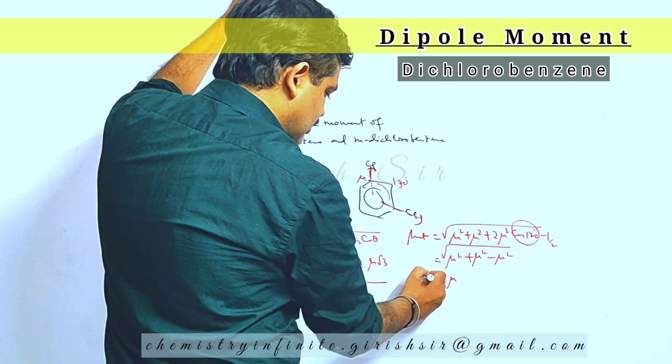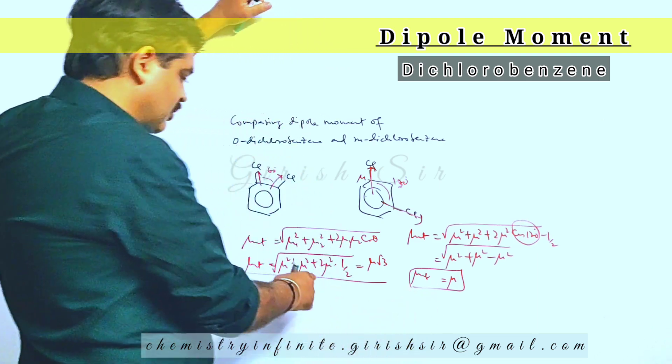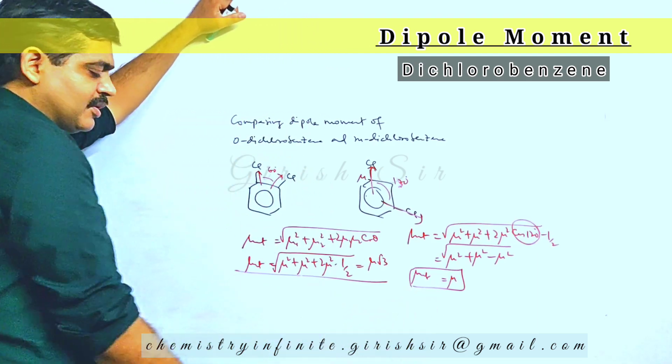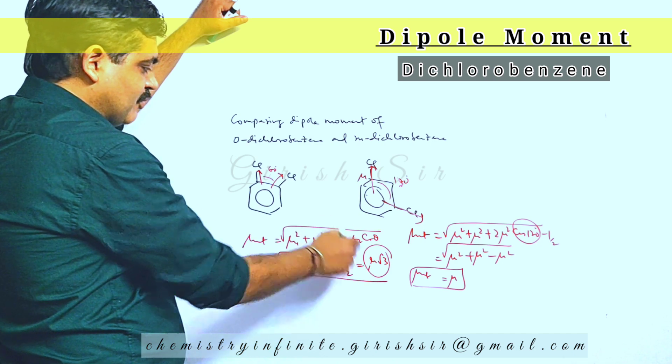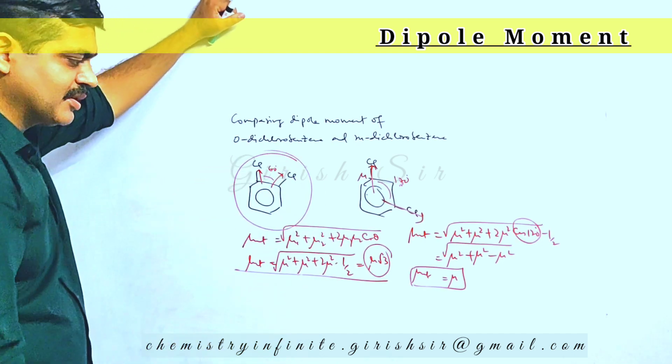Cos 120 has a value of minus half, so that should give you mu. So mu net is equal to mu here and mu net is equal to mu into root 3 here.